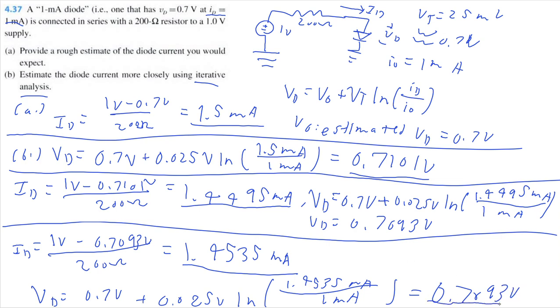So, I got the same voltage as my previous estimation. So, I can pretty confidently stop here and say that this is a pretty close estimate. The diode current would be 1.4535 milliamps when it's closely estimated, which you can see is about a hundredth of a milliamp less than our rough estimate. If we're doing serious circuit analysis, that can make a huge difference.